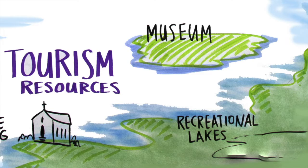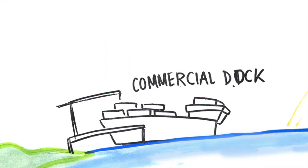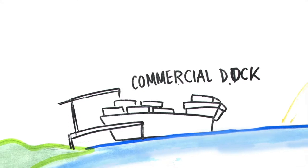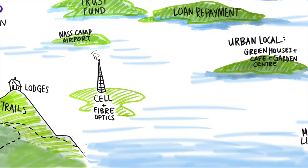Infrastructure that has already been developed includes the museum, a commercial dock, lodges, trails, cell and fiber optics, greenhouses, a cafe and garden center, and the Nascamp airstrip.